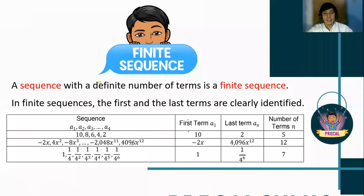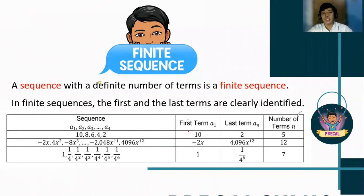Consequently, the next examples also show a finite sequence, because again the first and last terms are clearly defined and we can easily count the number of terms in the given sequence.